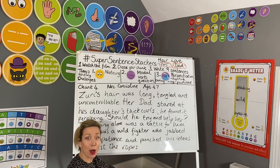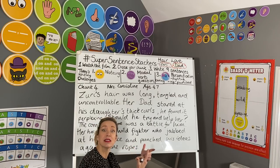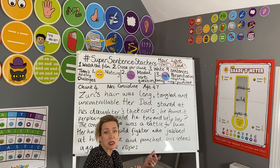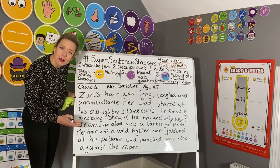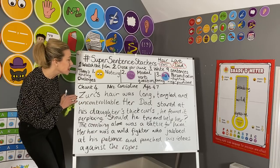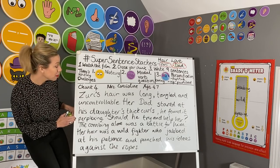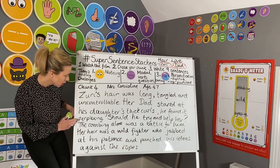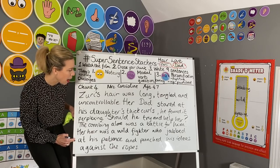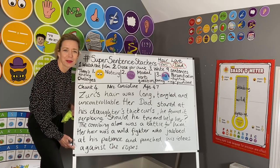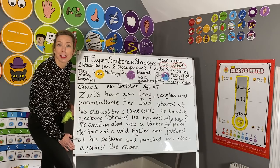I'm going to go back now and reread my work, because it's really easy when you're concentrating on composition and ideas that you might make silly mistakes with spelling or punctuation. This is part of my writing for chunk four: Zuri's hair was long, tangled and uncontrollable. Her dad stared at his daughter's thick curls. He found it perplexing. Should he try and help her? The combing alone was a battle for him. Her hair was a wild fighter who jabbed at his patience and punched his ideas against the ropes. I'm really pleased with bringing her hair to life as a wild fighter in the boxing ring.